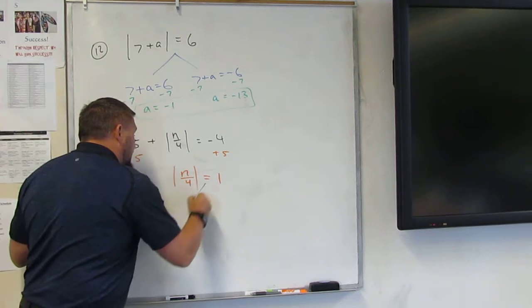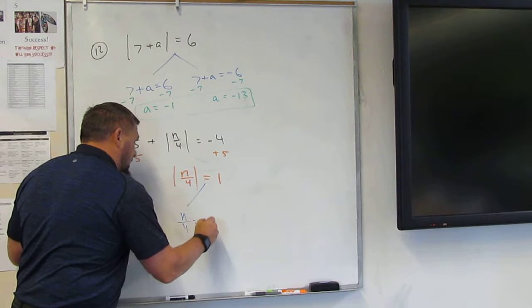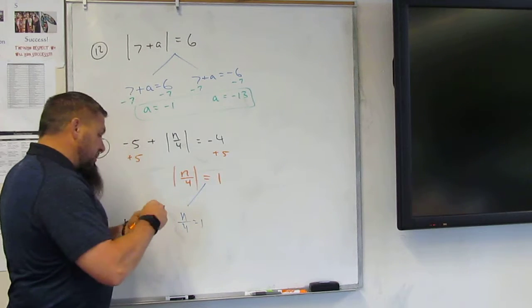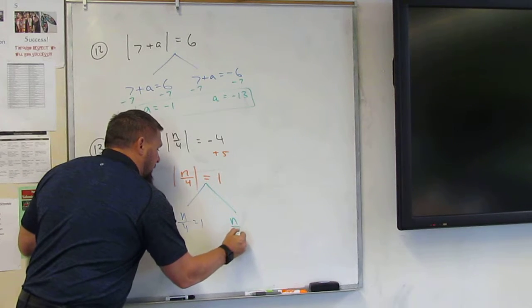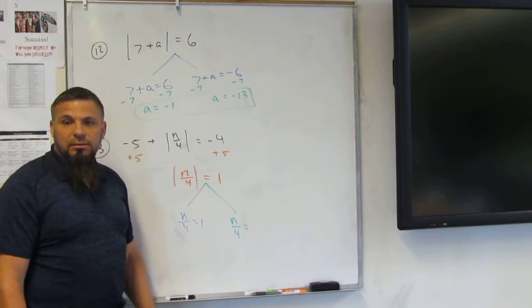So one of these is going to be n over 4 equals 1, and the other one is going to be n over 4 equals what? Negative 1.